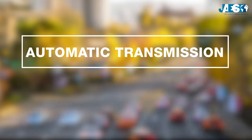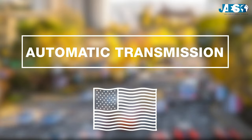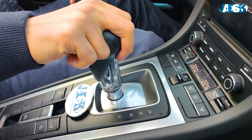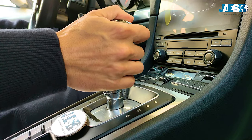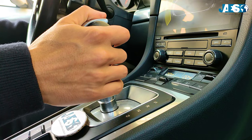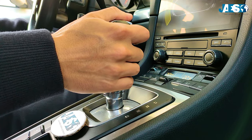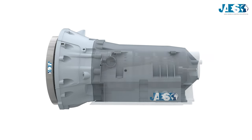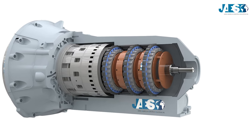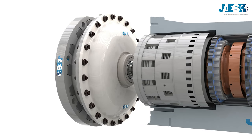The most popular automatic transmission is one with an epicyclic gear train, which is also very common in the US. This type of transmission is able to achieve smooth gear shifts, but unfortunately it has a low yield as well as a higher purchase and maintenance cost compared to other types of automatic transmissions. The epicyclic gear train differs from others because it uses a planetary gear combination and a torque converter instead of gear couplings and a clutch.